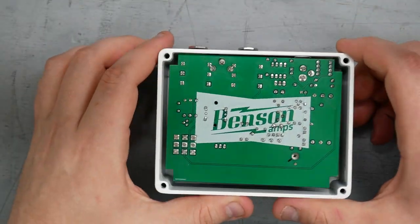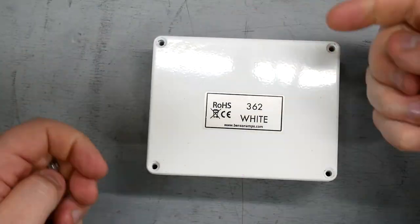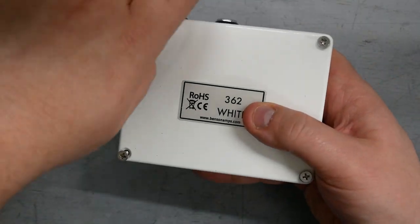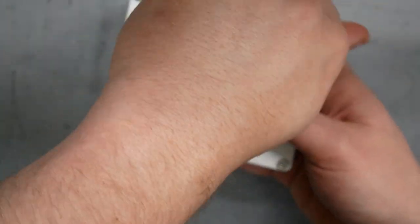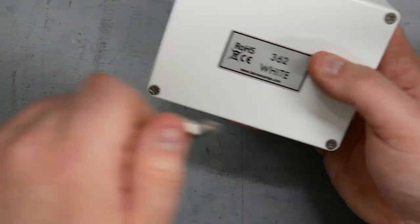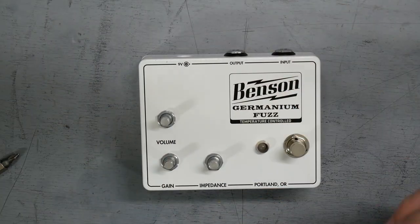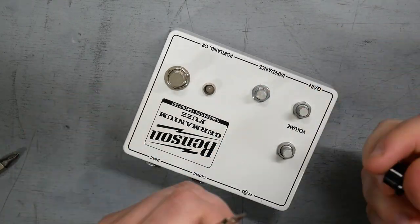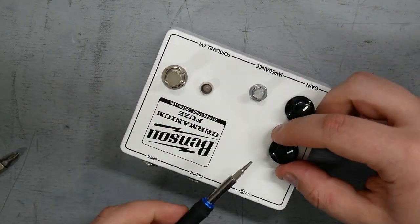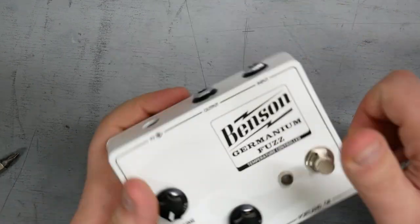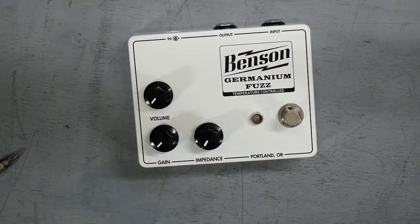Okay, let's pop our back door on here. There we go. And just our knobs. There we go. There it is. Benson germanium fuzz.